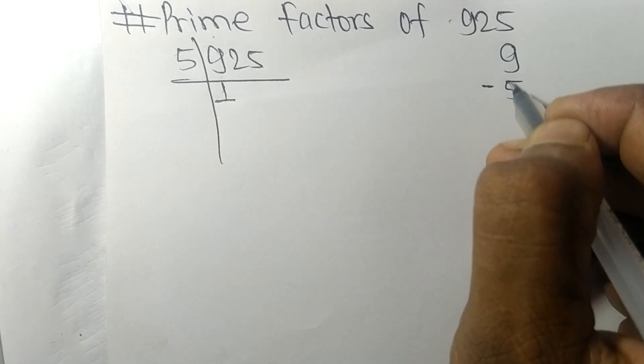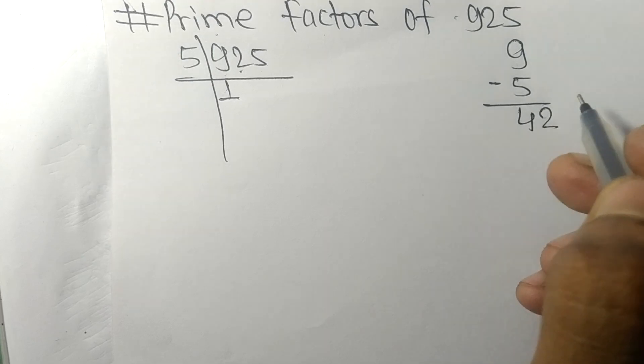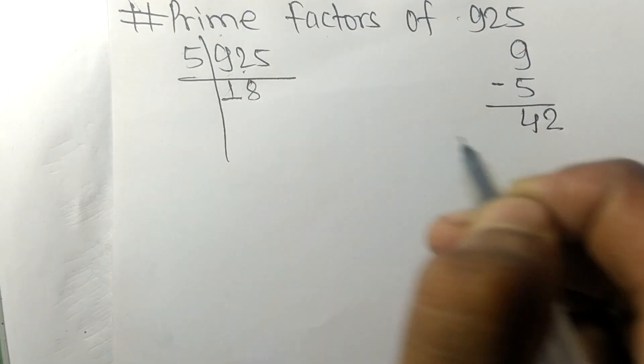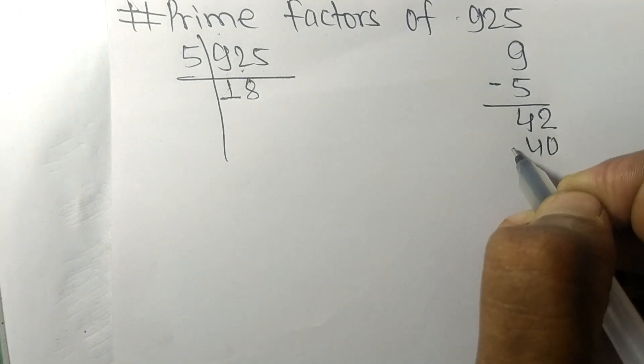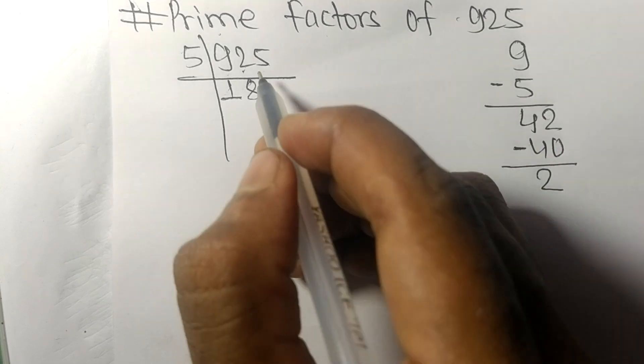On subtracting we get 4. Bring down the 2 to get 42. 5 times 8 equals 40. On subtracting we get 2.